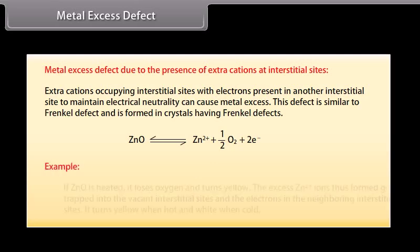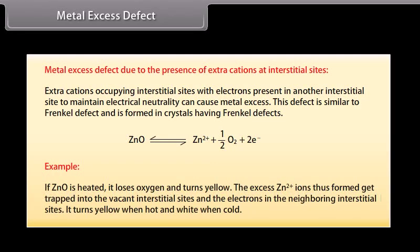Example: If ZnO is heated, it loses oxygen and turns yellow. The excess Zn2+ ions thus formed get trapped into the vacant interstitial sites and the electrons in the neighboring interstitial sites. It turns yellow when hot and white when cold.